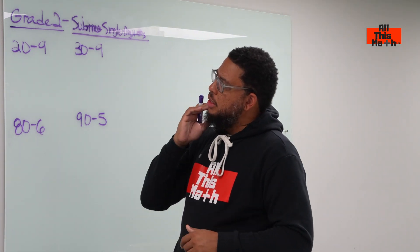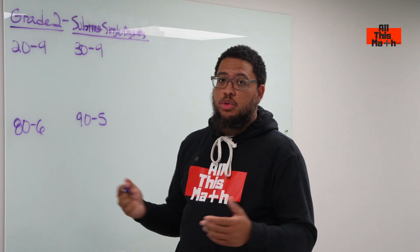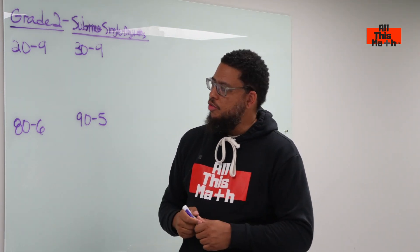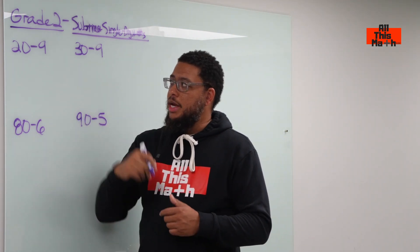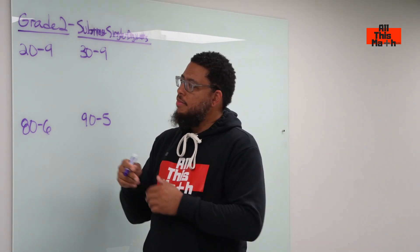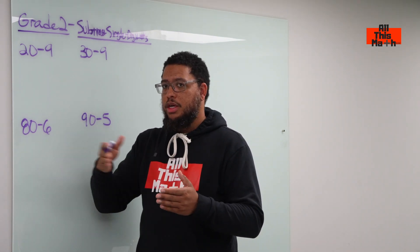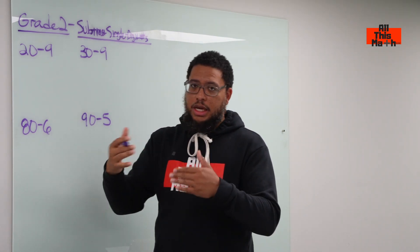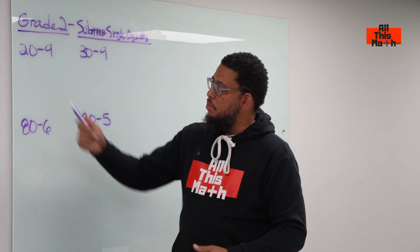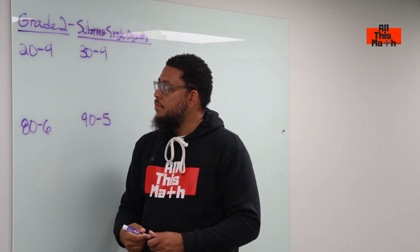So what we do is we look at this subtraction problem — let's take the first example. We have 20 minus 9. A little bit of math vocabulary for you: in a subtraction problem, the first number is what we call the minuend. The second number being subtracted is called the subtrahend. And of course the answer, we refer to that as the difference.